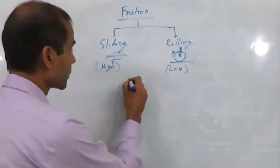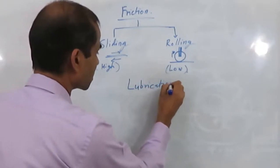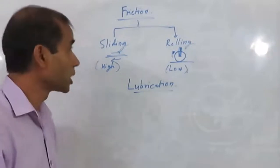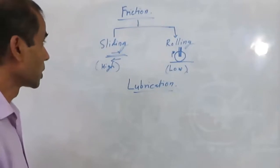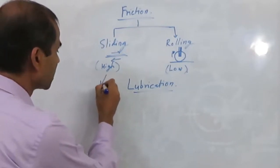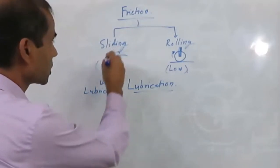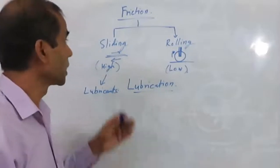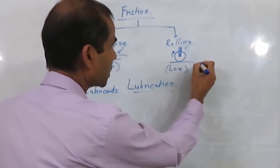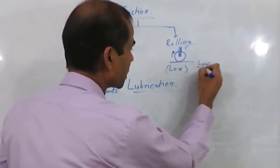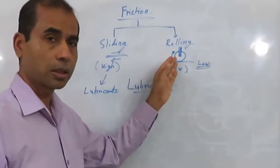Lubrication is basically a solution for reducing friction. For sliding type of friction we can use lubricants or any other kinds of solution for reducing friction in sliding. Rolling friction by definition is very low, so in principle we do not need any lubrication for rolling friction.